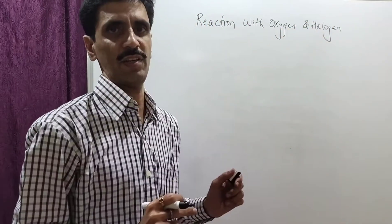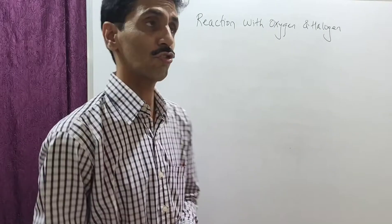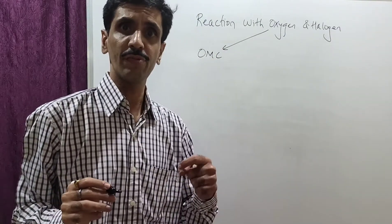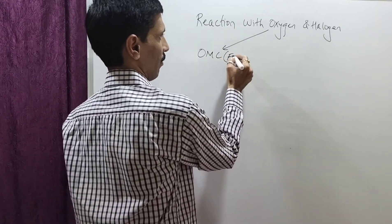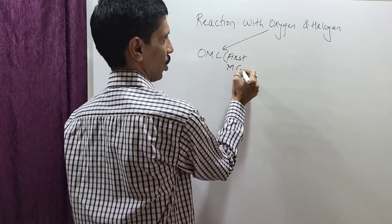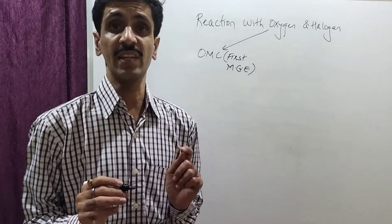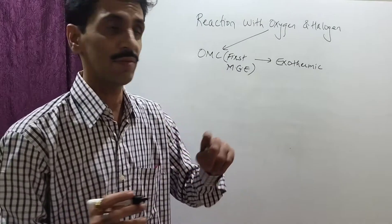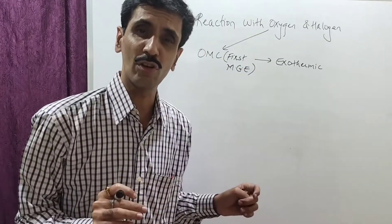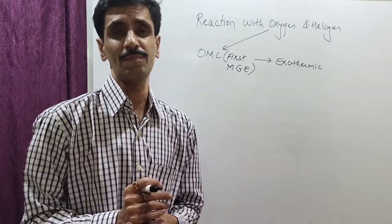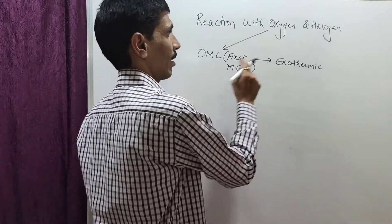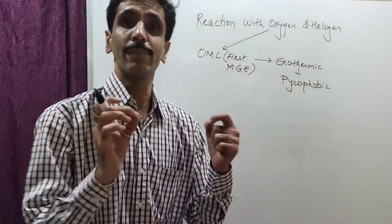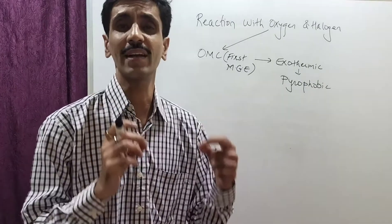First of all, we will begin with oxygen and then we will be discussing about halogen. Whenever oxygen reacts with organometallic compounds, specifically of the first main group elements — which I write down in short as MGE — the reaction is exothermic. The reason is because the reaction between these first main group elements, that means the alkali metals, alkaline earth metals, and group 13, they are going to be pyrophoric. Pyro means it is related to heat. Pyrophoric is the ability to ignite instantaneously when it comes in contact with oxygen.